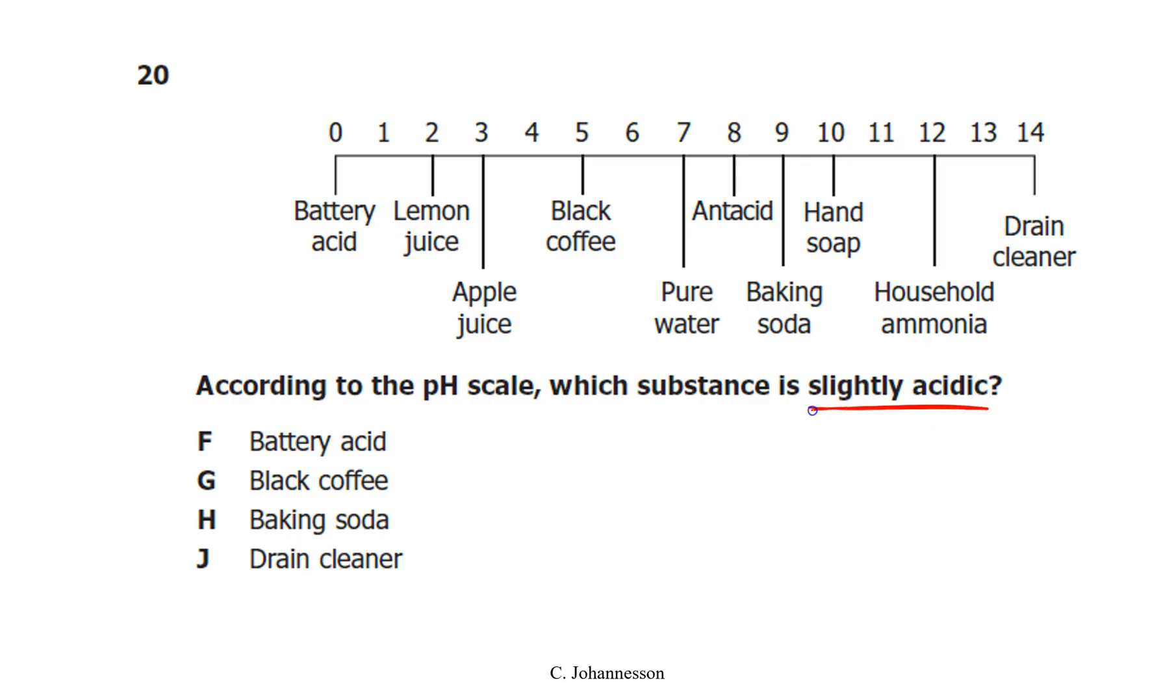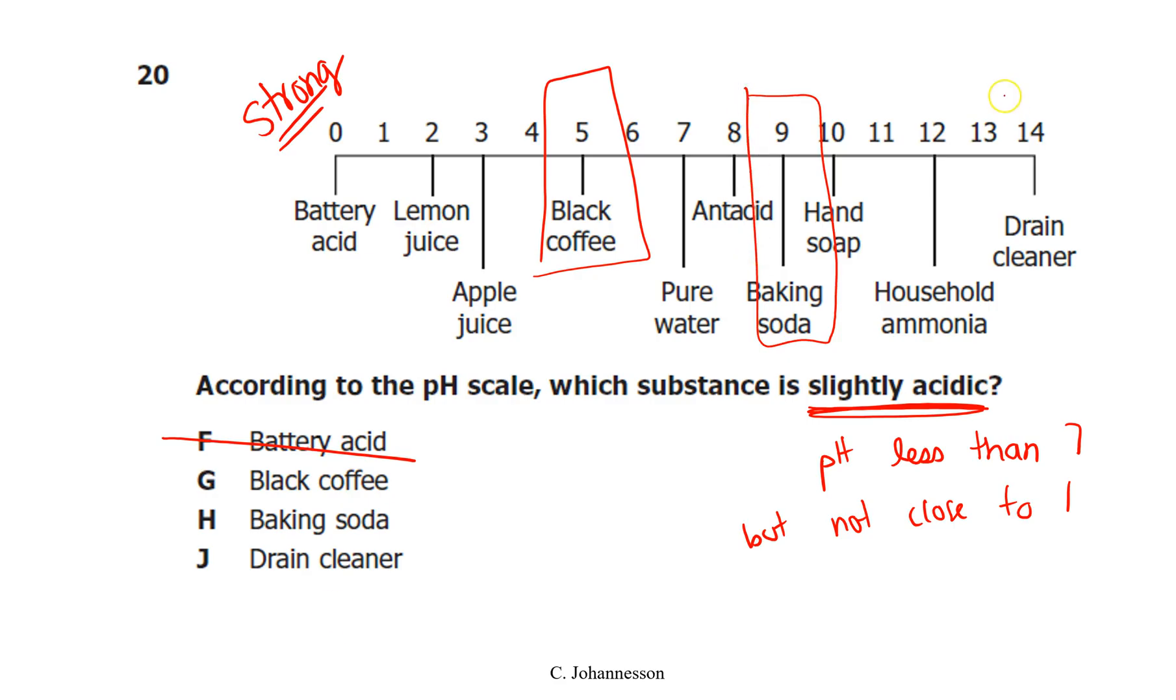All right, next. According to the pH scale, which substance is slightly acidic? So we're looking at something with a pH that's less than 7 but not close to 1. So battery acid, these are going to be the strong acids, so that's out. If you look at black coffee, that's here in the middle. Baking soda is here at 9, and drain cleaner's at 14. So 9 and 14, they are both bases. So our answer is going to be G, black coffee, because that's a pH of 5.